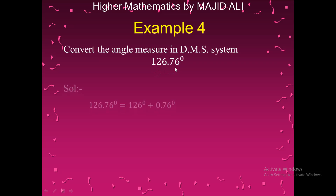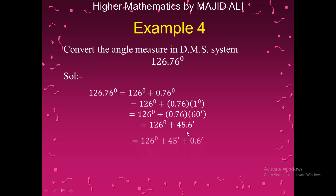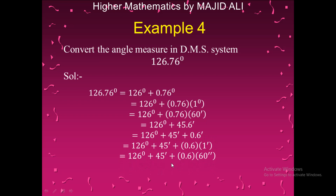Example 4: Convert 126.76 degrees from decimal to DMS. We write 126 degrees plus 0.76 degrees. Multiplying 0.76 by 60 gives 45.6 minutes. So we have 126 degrees 45 minutes plus 0.6 minutes. Multiplying 0.6 by 60 seconds gives 36 seconds. The final answer is 126 degrees 45 minutes 36 seconds.